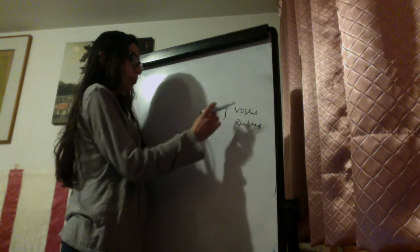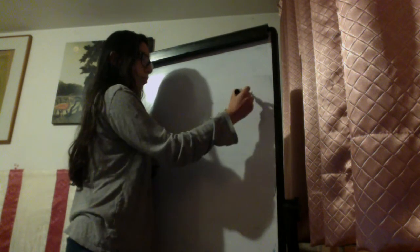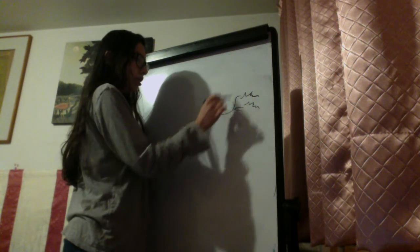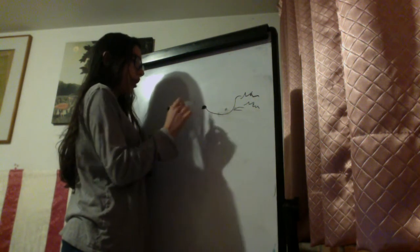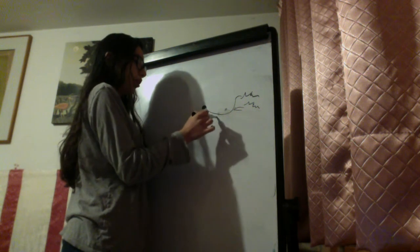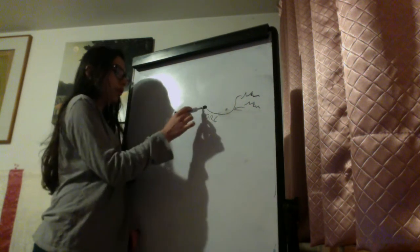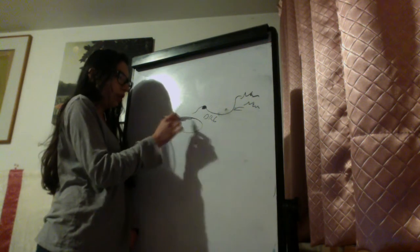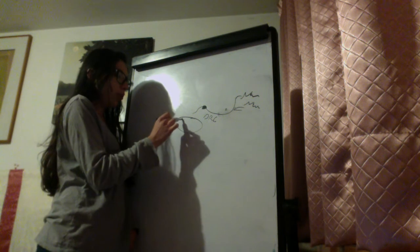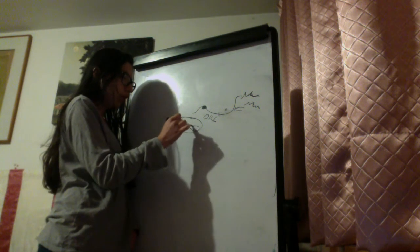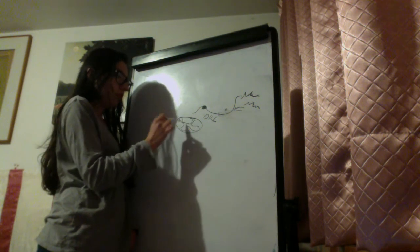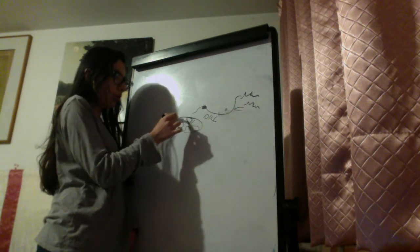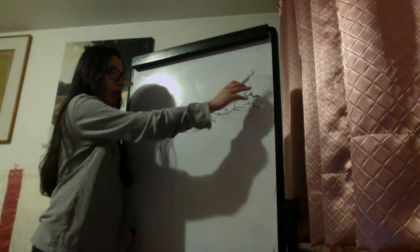These neuromuscular and neurotendinous spindles are sensed by dendrites whose cell bodies lie on the dorsal root ganglia. The axon will then synapse on the posterior funiculus — it could be the lateral, sorry, the posterior funiculus at the gracilis or cuneatus nucleus depending on which level we are coming from.